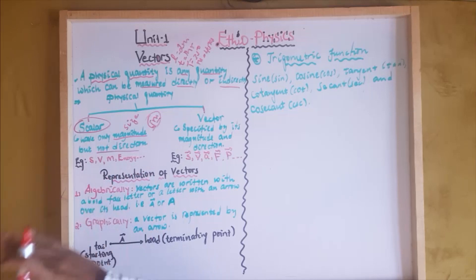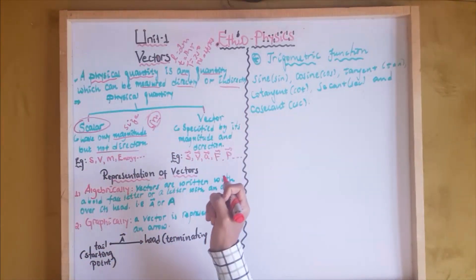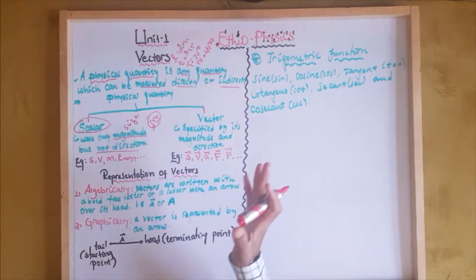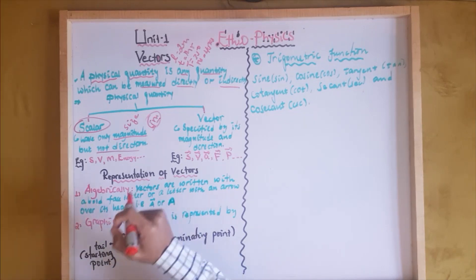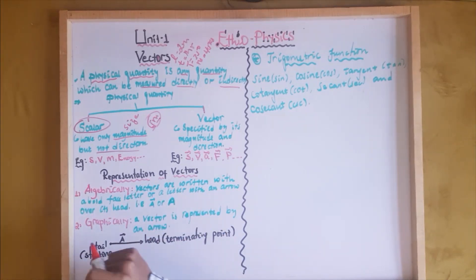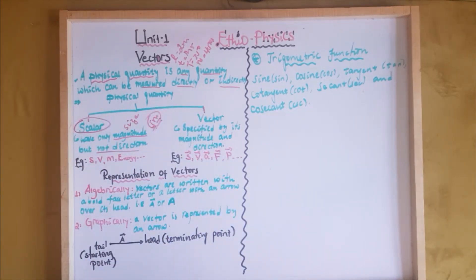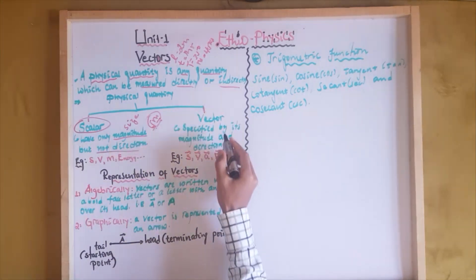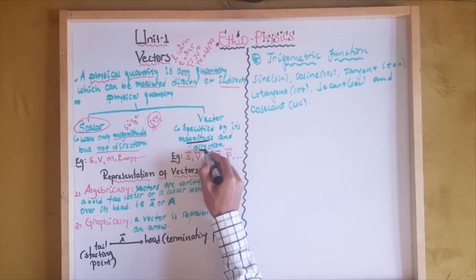The direction of a quantity can be described as east-west or similar orientations. Magnitude is a number with a unit — that is the size of the quantity. So vectors are specified by both magnitude plus direction.